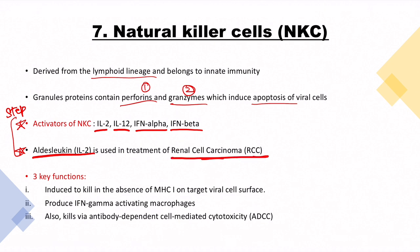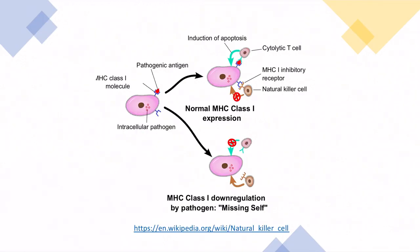The three key functions of natural killer cells are: (1) killing cells in the absence of MHC-I on target viral cell surfaces; (2) producing interferon-gamma to activate macrophages; and (3) killing via ADCC — antibody-dependent cell-mediated cytotoxicity. The next diagram explains function number one regarding MHC class I expression.